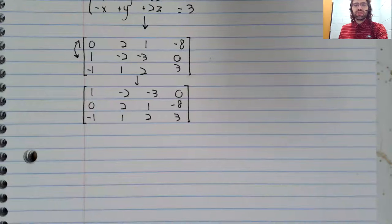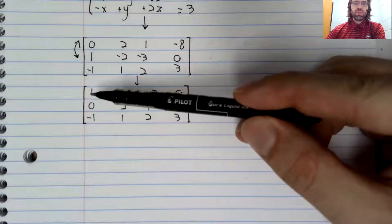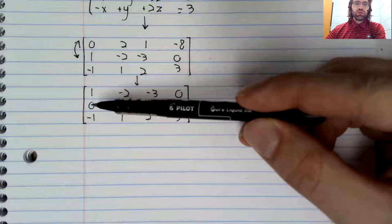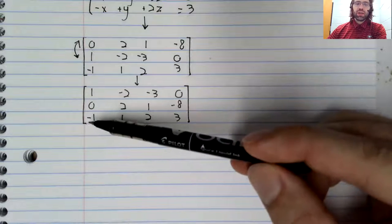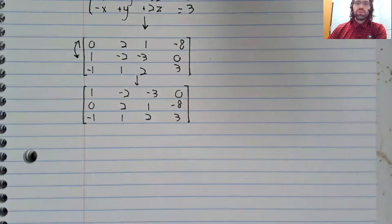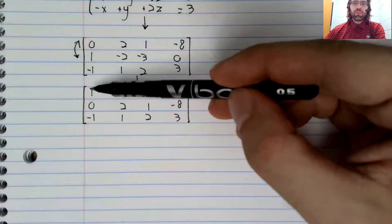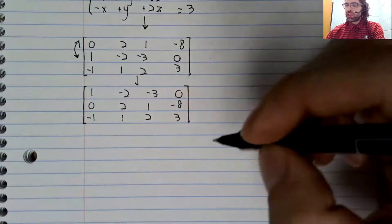When we swap the first and the second, we get this. Now we need to make everything below this one be zero. This is already zero, so there's nothing to do here. We need to turn this negative one to zero via addition. One plus negative one is zero. We already have a one up here, so we don't need to multiply by a constant.